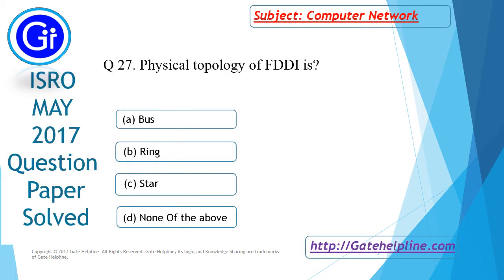So as per our discussion, option B — ring topology — is the physical topology for FDDI.